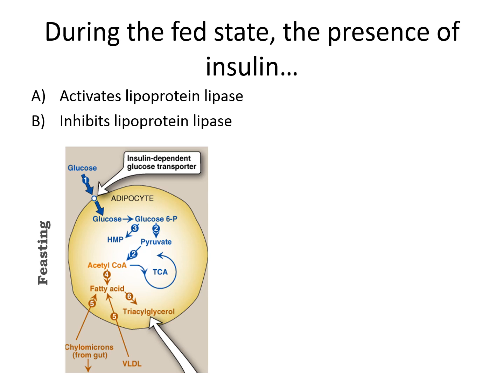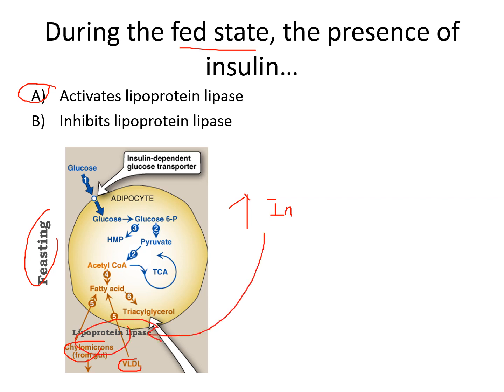During the fed state, the presence of insulin activates lipoprotein lipase. During the fed or feasting state you get more insulin, and as a result, with more insulin, more chylomicrons and more VLDL are broken down into fatty acids by the enzyme lipoprotein lipase. In other words, insulin activates lipoprotein lipase.